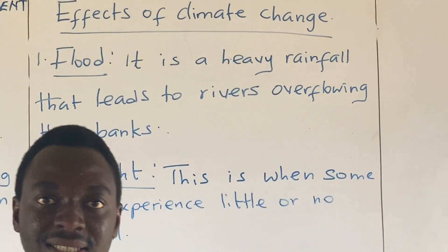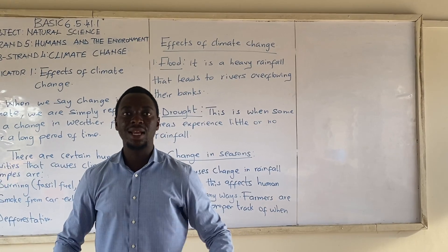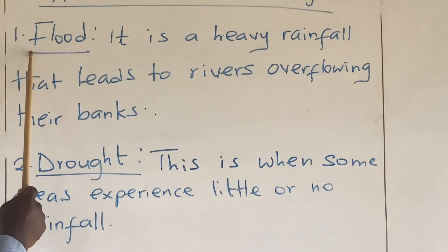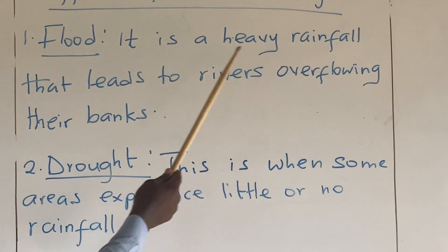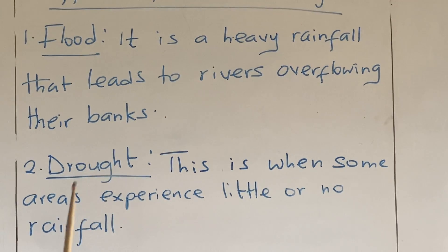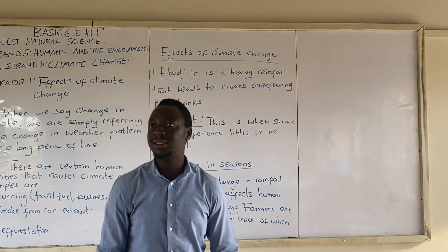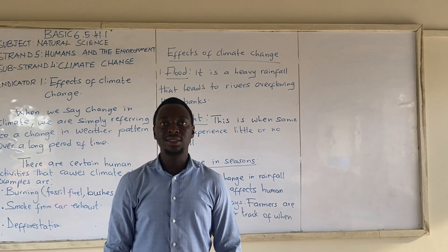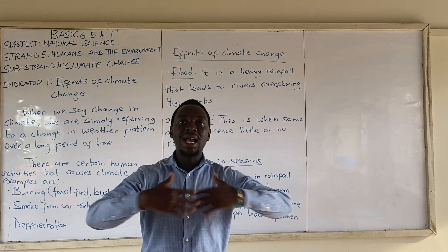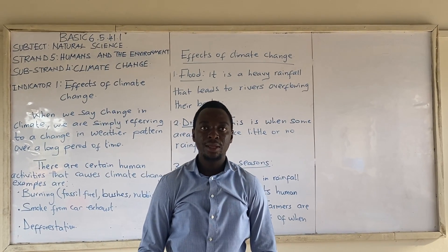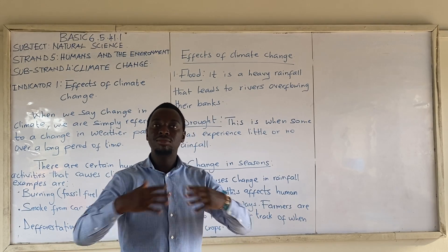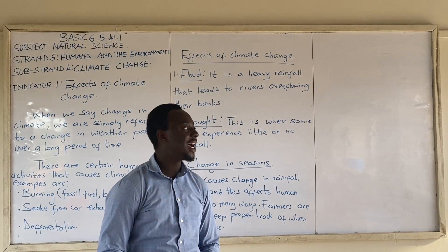When the climate changes, or when the weather pattern changes for a longer period, what are some of these effects? One, it causes flood. Flood is a heavy rainfall that leads to rivers overflowing their banks. When rivers overflow their banks, they destroy properties and even take human lives — houses are carried away by the water, properties are destroyed, human lives are taken away.